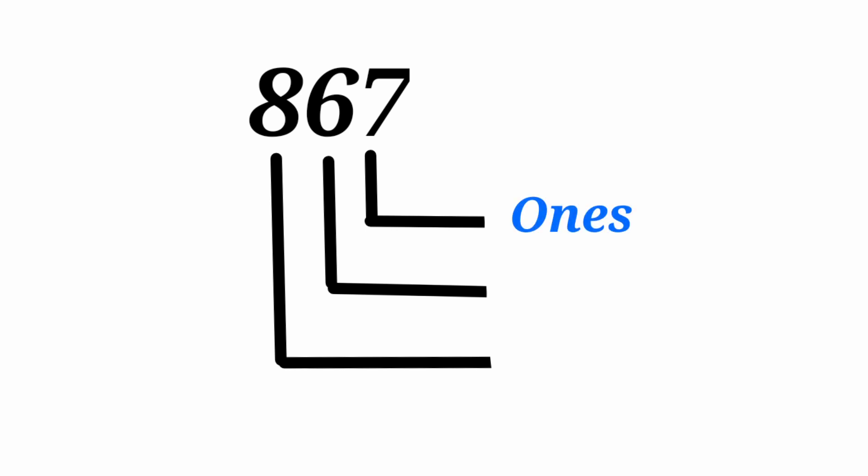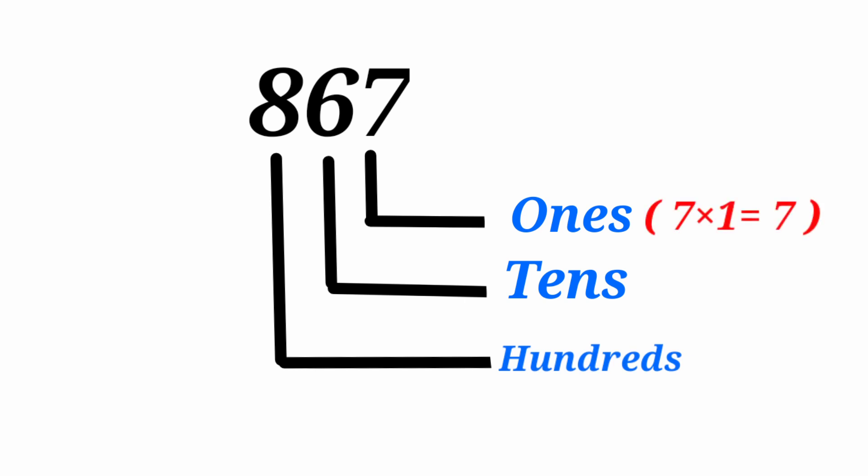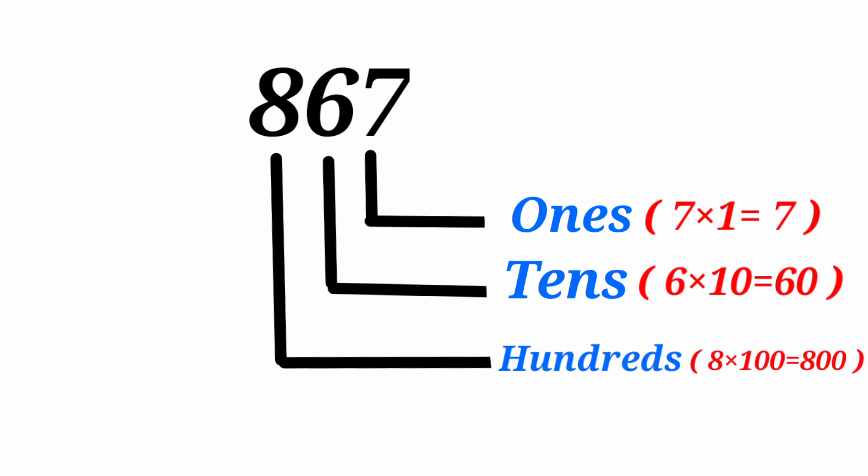Now I write the number 867. How many digits do you find in the number? 867 is a 3-digit number. 7 is in the 1s place. 6 is in the 10s place. 8 is in the 100s place. That means 7 ones, 6 tens — 6 tens means 60 — and 8 hundreds, which means 8 times 100.